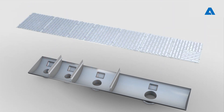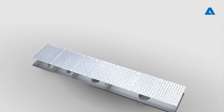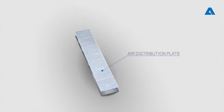Air distribution plate: responsible for even distribution of the fluidization air. It separates the wind box from the product chamber.